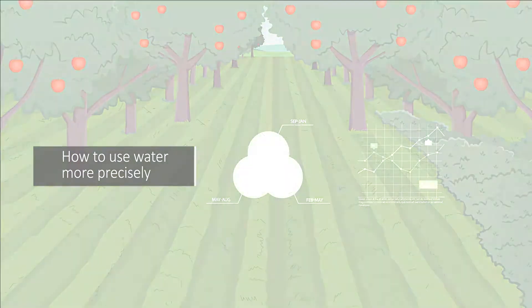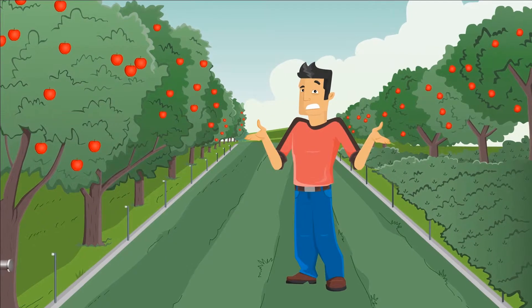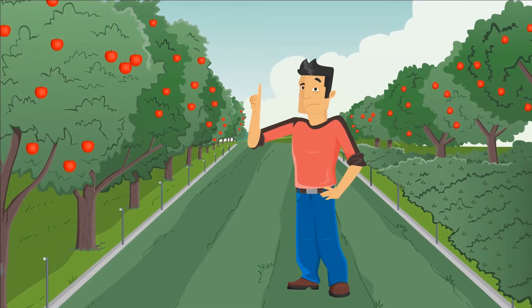Take this apple orchard for example. How does the farmer know when to water and how much water to use?